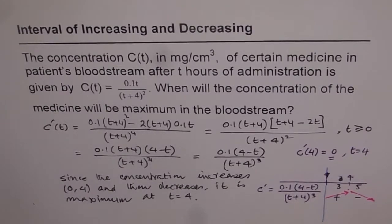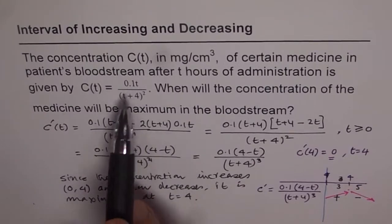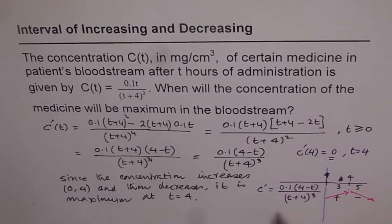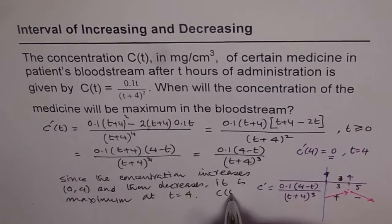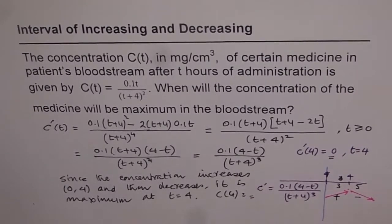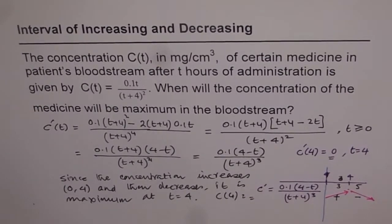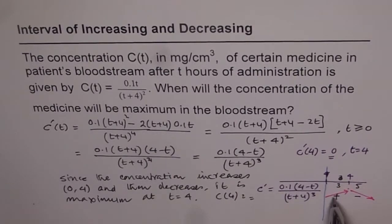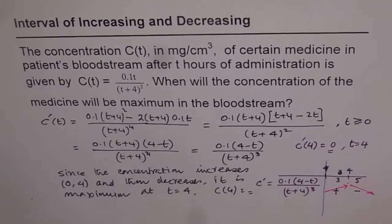Sometimes they may ask how much the maximum concentration will be. In that case, you can plug T = 4 into the original equation and find the value of C(4). Since it has not been asked in this question, we are not computing it here. This is an application of increasing and decreasing intervals — at a maximum, the function changes from increasing to decreasing. That is the key concept for this application problem.